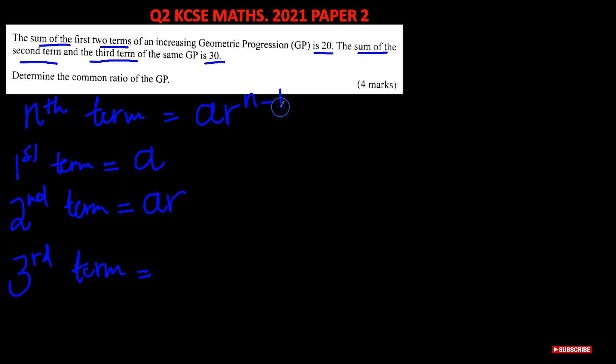So 3 minus 1 is 2, so we have a times r squared. And then we're told the first two terms add up to 20. That means if we add these two, we will get 20. So we have a plus ar, and this is going to give you 20.